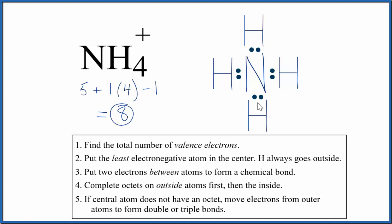The nitrogen in the center, it has 8. It has an octet. So this is the correct Lewis structure for NH4 plus.